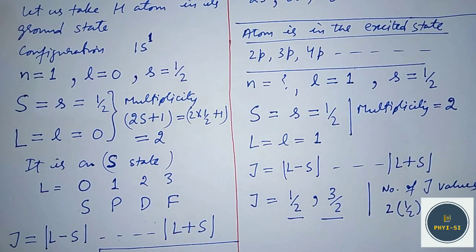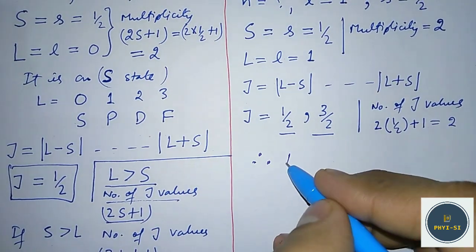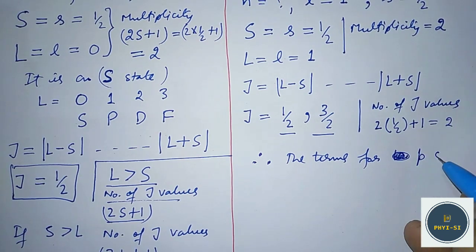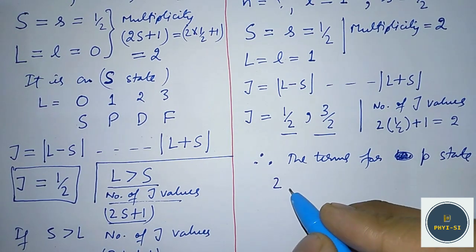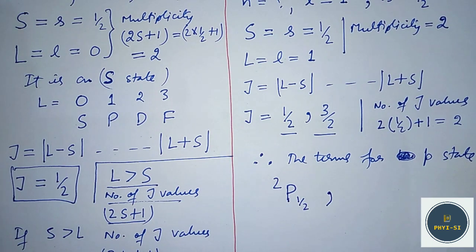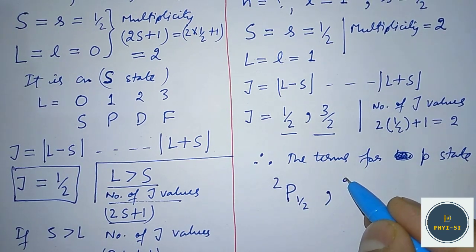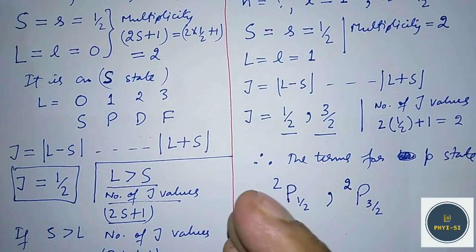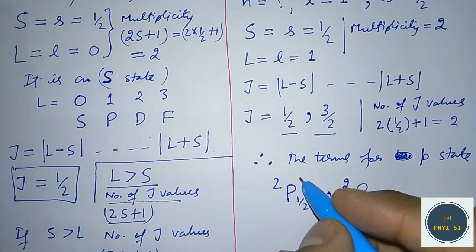Therefore the spectral terms for a one-electron atom in the p state are: ²P₁/₂ (the first term) and ²P₃/₂ (the second term). The '2' is the multiplicity, 'P' indicates capital L equals 1, and the subscripts 1/2 and 3/2 are the two J values.